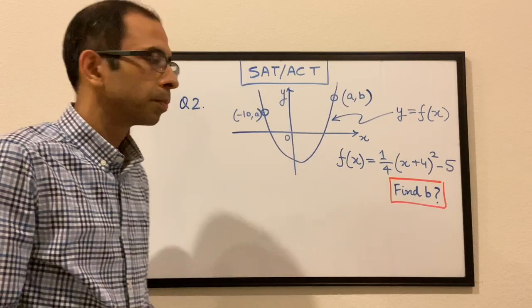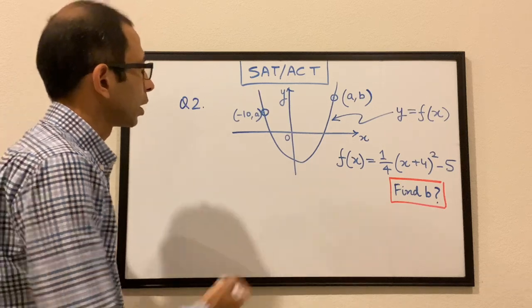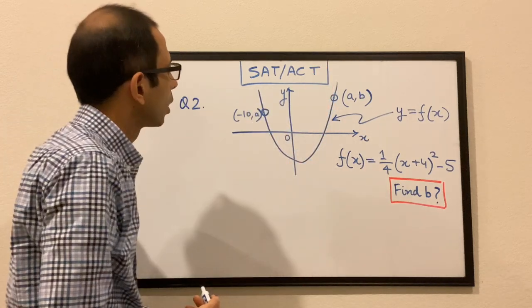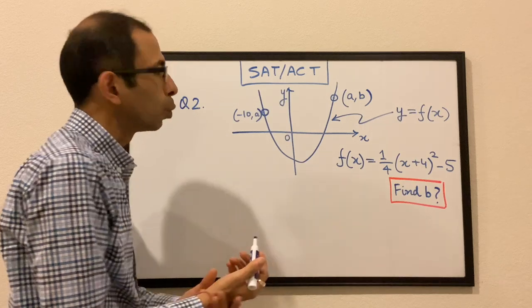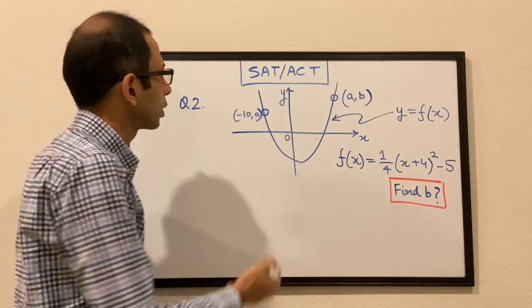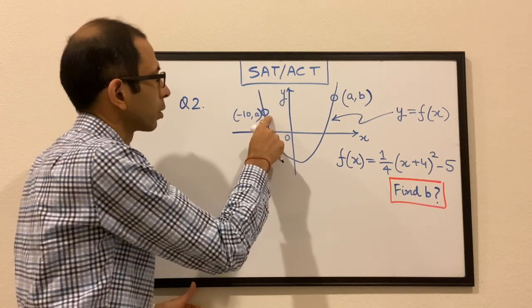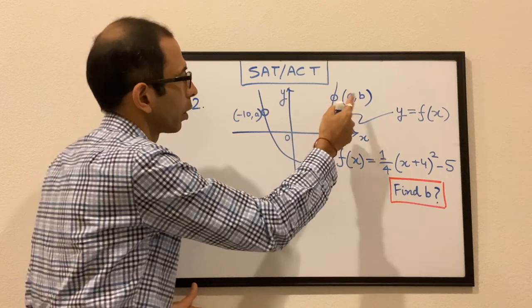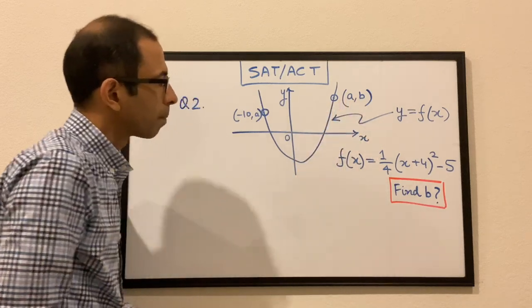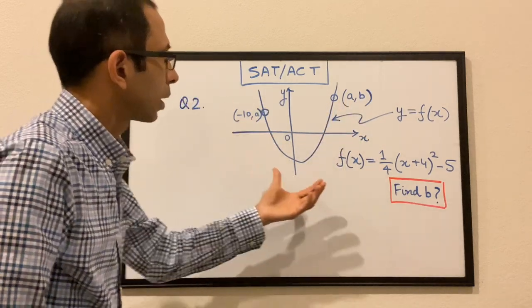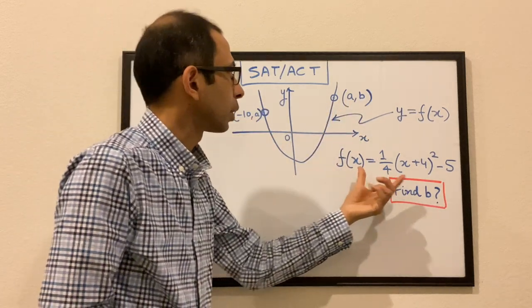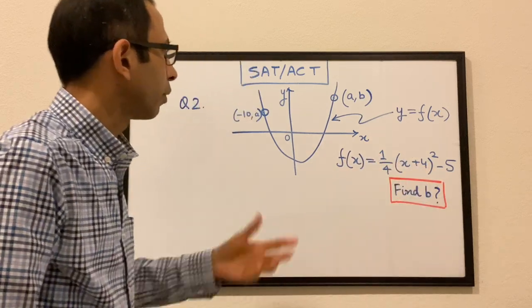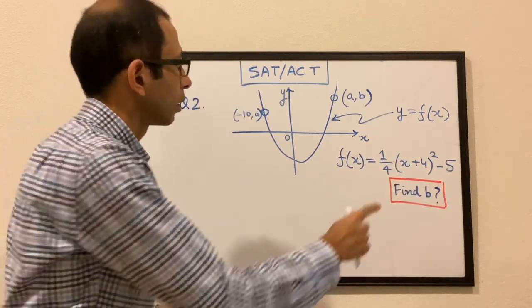Question 2: we have been given a parabola with two points — (−10, a) and (a, b) — and the parabola is given by the equation (1/4)(x + 4)² − 5. We have to find the value of b.